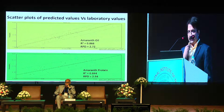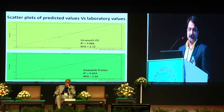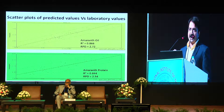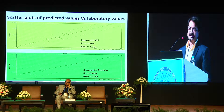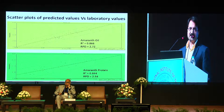In the results, the scatter plot for amaranth oil shows the NIR predicted value on the x-axis and the actual laboratory value on the y-axis. There is good agreement between the lab value and the predicted value for both oil and protein.